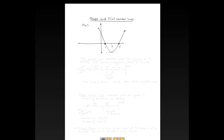First, let's talk about what an f(x) number line is. An f(x) number line represents the y-values of the function — whether they are positive, negative, zero, or do not exist. The key thing to associate with an f(x) number line is that it focuses on the y-values of the function.